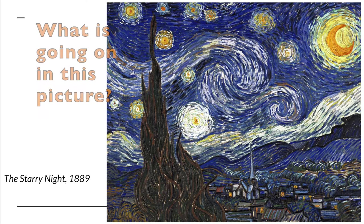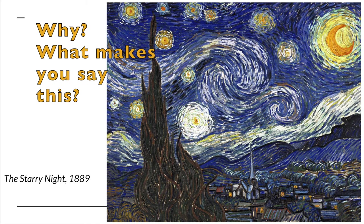Now think about why. What makes you say this? This is what my son said: 'The wind looks like little lines just making the wind, and the sun looks like the moon because it's so bright.'